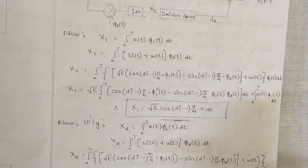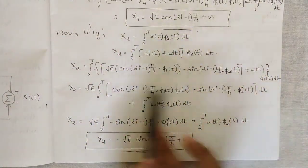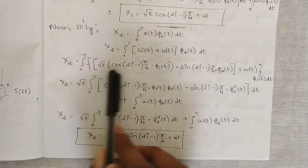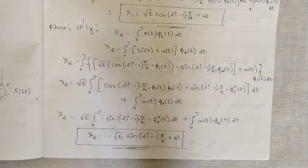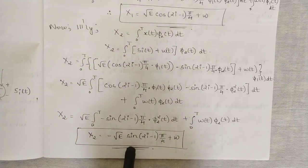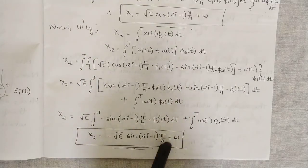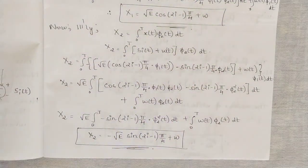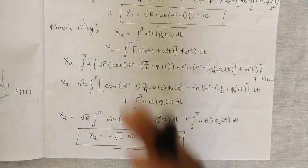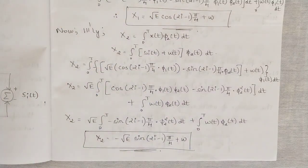Similarly, for the observation vector x2, following the same procedure with φ2(t), after substitution and simplification the result is: x2 = −√E·sin((2i−1)π/4) + w. The noise factor w is common to both observation vectors. These are the expressions for x1 and x2 describing the generation and detection of the QPSK signal.